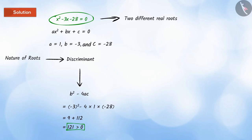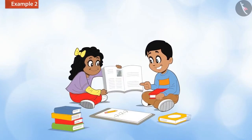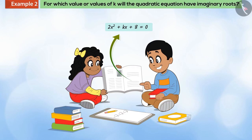Let us look at another example. While learning the quadratic equation lesson, Jaya saw the equation 2x squared plus kx plus 8 equal to 0. Seeing this, she asks her friend Jai a question. The question was, for which value or values of k will the quadratic equation have imaginary roots?